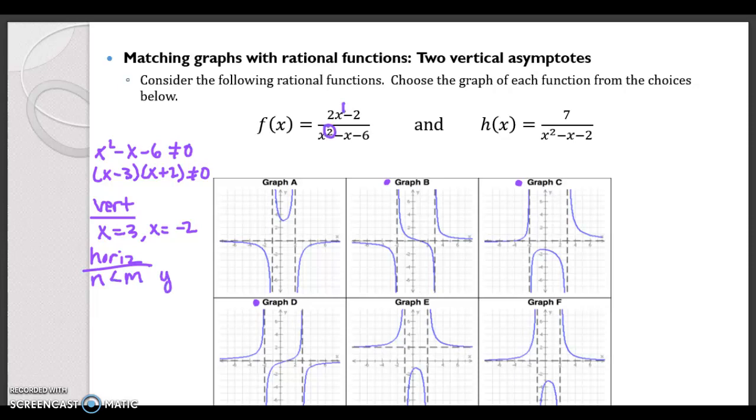So that means y equals 0 is our horizontal asymptote and that actually happens on all of them. So that wasn't super helpful either.